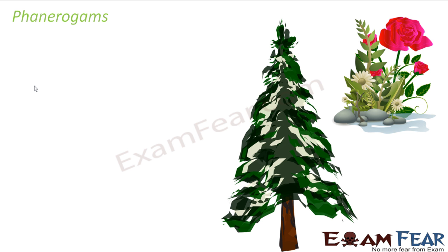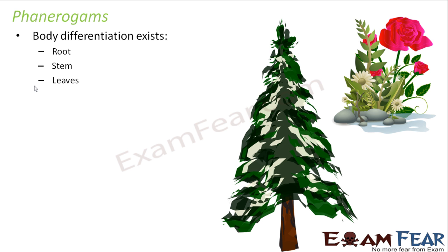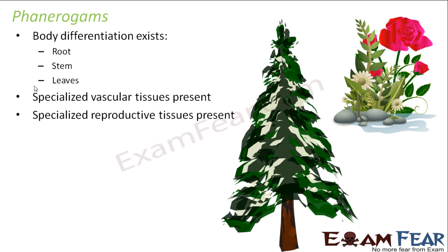Now comes the Phanerogams. Let us see what improvement does this bring in. Here, body differentiation exists into roots, stem and leaves — we properly see roots, stem and leaves. Specialized vascular tissues are also present. Specialized reproductive tissues are present — that is the improvement here.